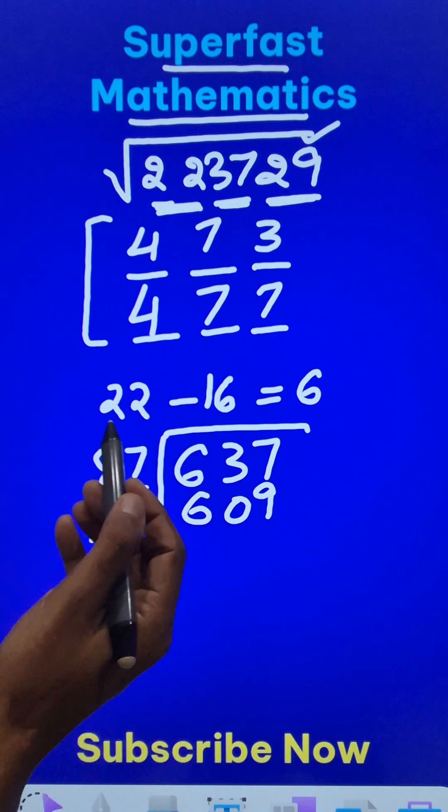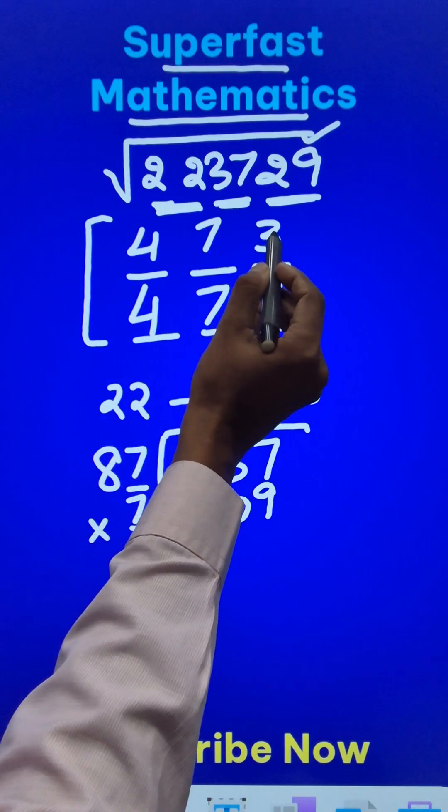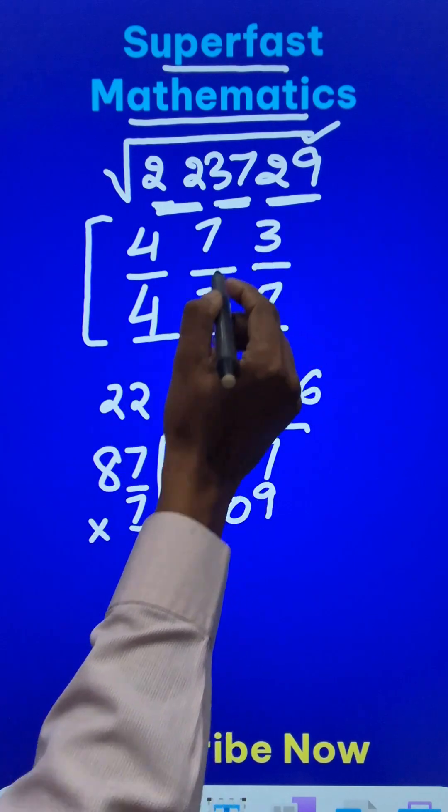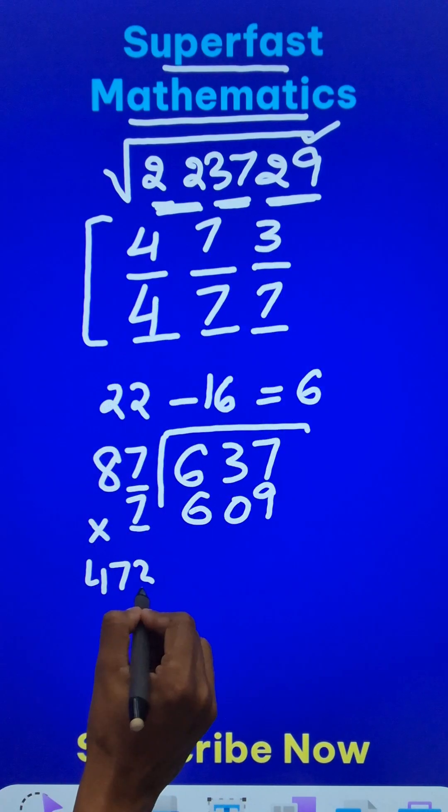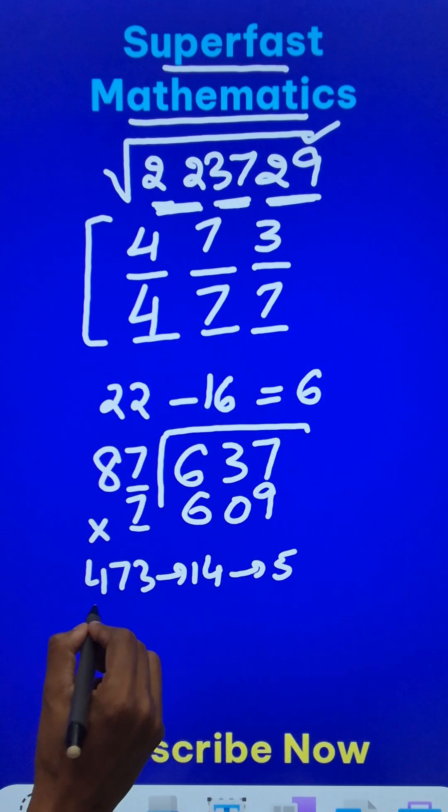For that I just need to do the digit sum method. 4 plus 7 plus 3 is 11 plus 3, that is 14, right? So 473 gives 14, and 14 gives 1 plus 4, which is 5. Likewise, 477 gives 7 plus 7, which is 14, plus 4, which is 18, and 18 is 1 plus 8, which is 9.